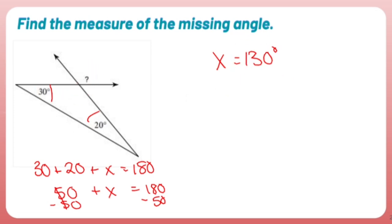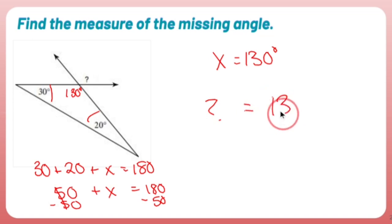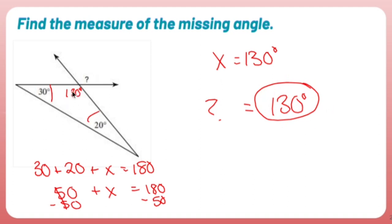Let's get rid of X since it's just an arbitrary letter. If X is 130 degrees, how does that help me find the question mark? Well, this question mark is vertical from 130, which means the question mark is the same as 130. So the missing angle is 130. A lot of times you have to build like a puzzle — I used the interior angle sum formula to find 130, and the vertical angle gives us the question mark of 130.